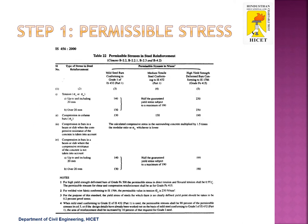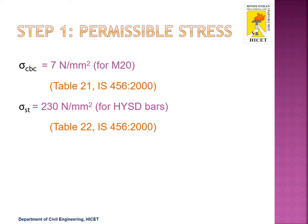Next, we need to find the permissible stress in steel reinforcement from Table 22 of IS456-2000. From this table, we take the value of sigma ST for Fe415 grade of steel. The sigma ST value for tension reinforcement, whether up to 20 mm or over 20 mm, is 230 N/mm². So sigma CBC for M20 concrete is 7 N/mm² and sigma ST for HYSD bars is 230 N/mm², as per Table 21 and 22 of IS456-2000.